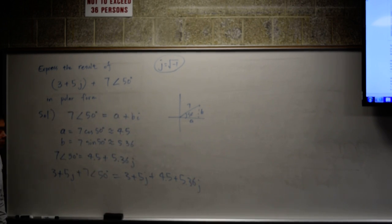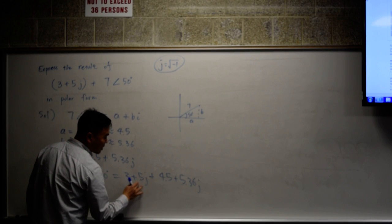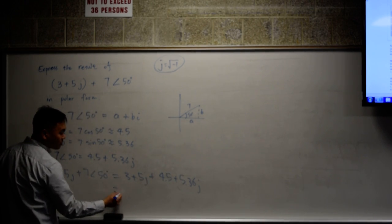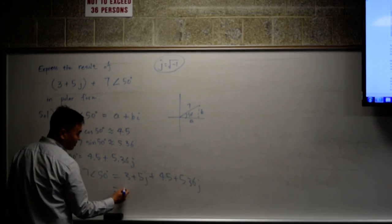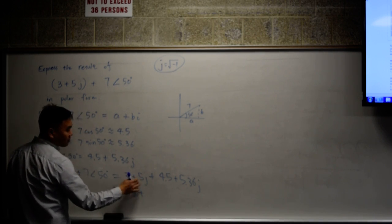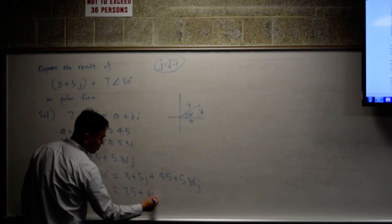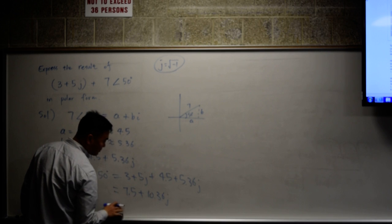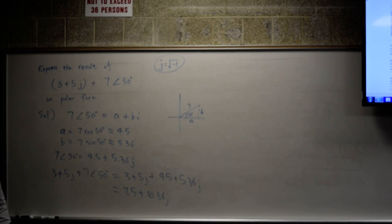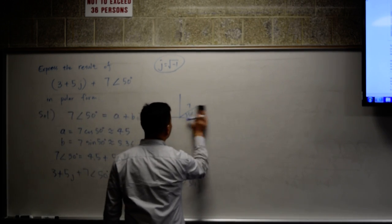You add the real part by the real part and the imaginary part by the imaginary part. So 3 plus 4.5 is 7.5 plus 5 plus 5.36 is 10.36j.